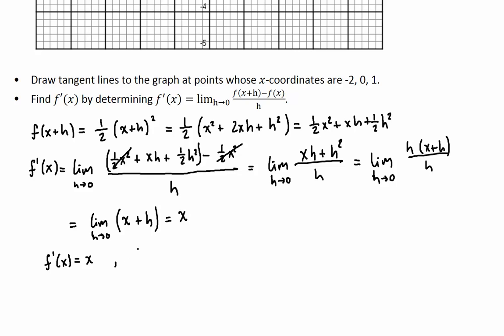So the derivative of f(x) is going to be just x. Remember, our function, our original function was a half of x squared. Just in case you had forgotten, this is the function, and this is its derivative. Alright, so let's keep going.